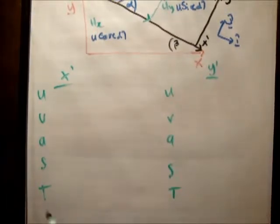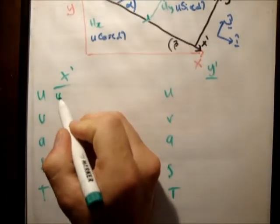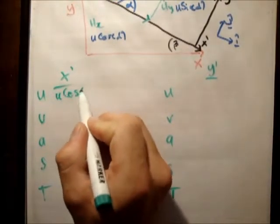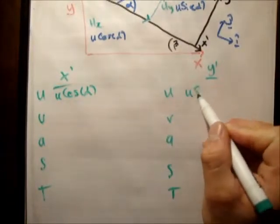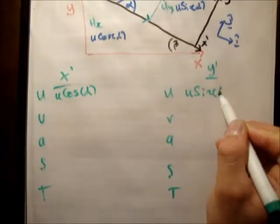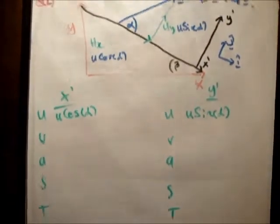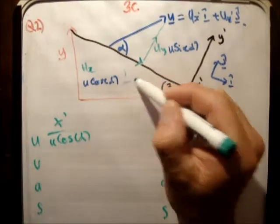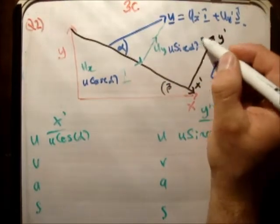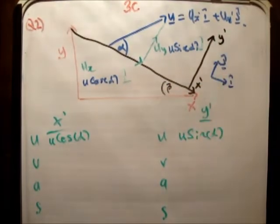So this is u cos alpha in the i-hat direction, and this is u sine of alpha in the j-hat direction. That was reasonably straightforward — nothing we haven't done in the past.